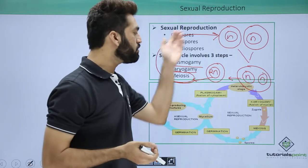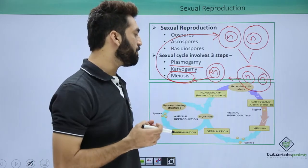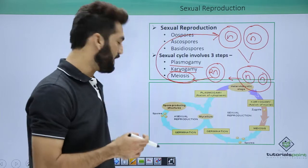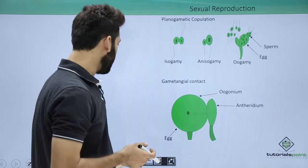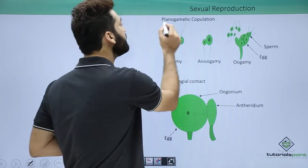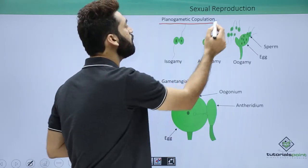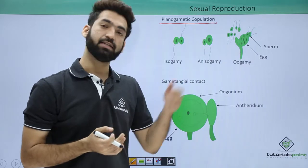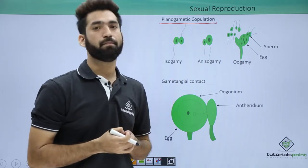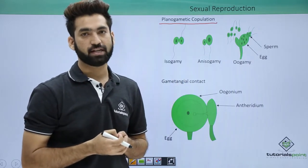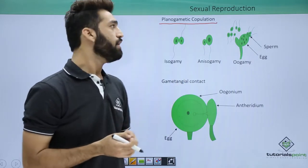Sexual reproduction in fungi involves five methods. The first method is called planogametic copulation, which is one of the simplest methods of sexual reproduction in fungi.